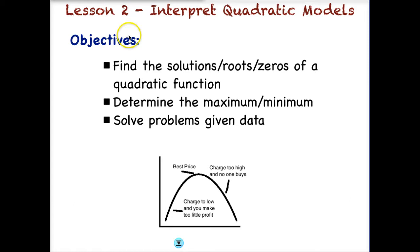A lot of times in business, a quadratic model is used to maximize profits or to minimize cost. And you can see that, if you remember, quadratics form parabolas, so there's always a maximum point or a minimum point. And then there are points all along that we can use to interpret our problem, which we'll go through today.